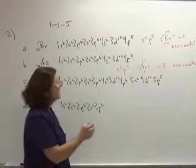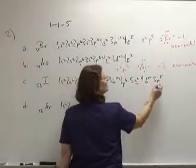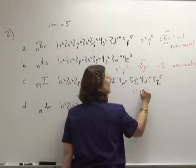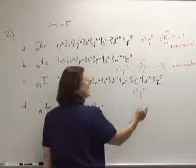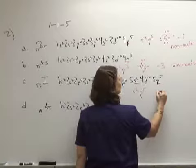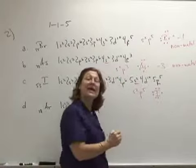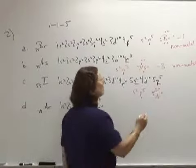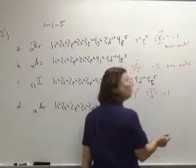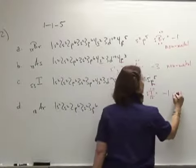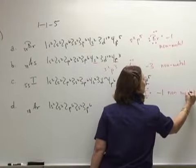Then iodine has an ending electron configuration of s2p5. It has 7 dots. It has an oxidation number of minus 1 or a charge of minus 1. And it also is a non-metal.